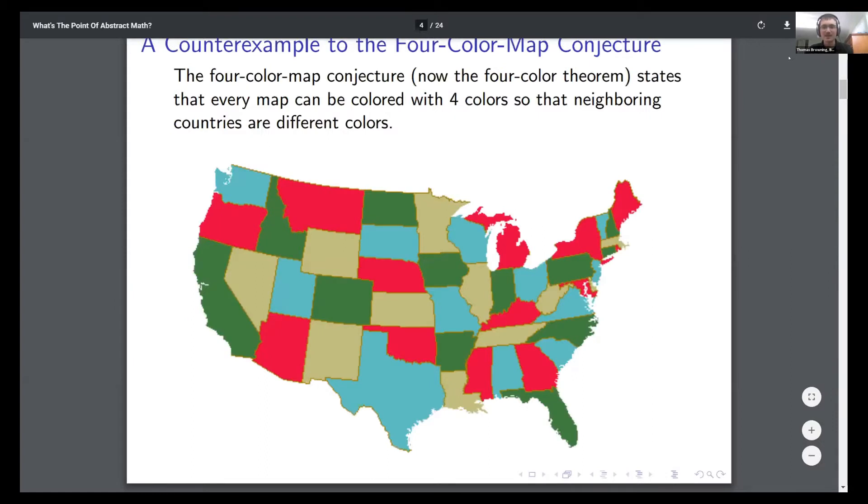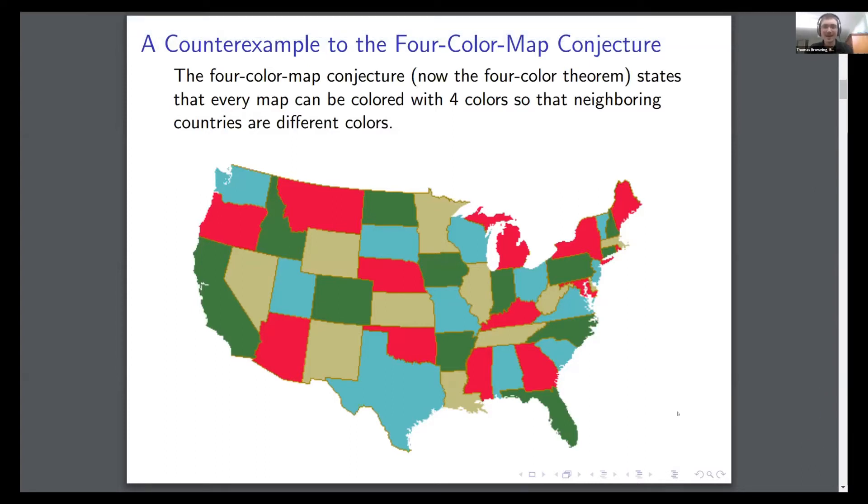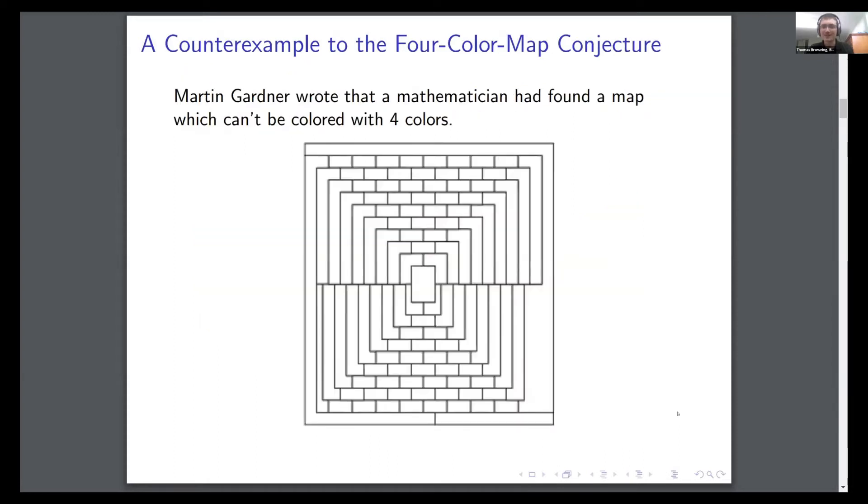The first one was one of the more mathematical ones. There was this long-standing conjecture called the four-color map conjecture. At the time it was unknown whether every map could be colored with four colors so that neighboring colors look different. Martin Gardner claimed that a mathematician had found a map that couldn't be colored with four colors.